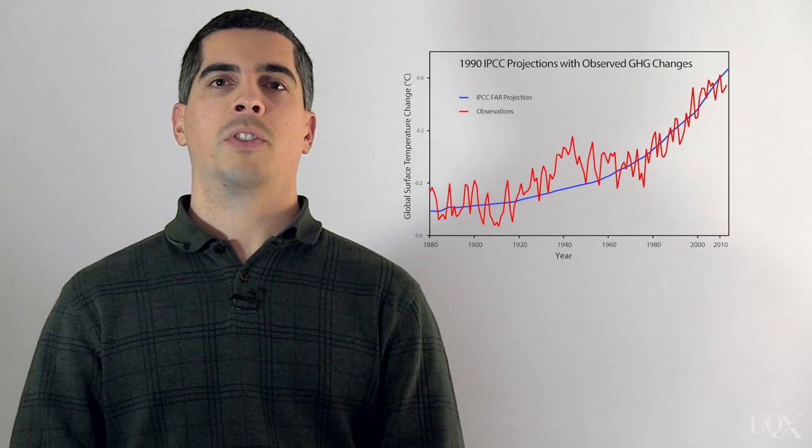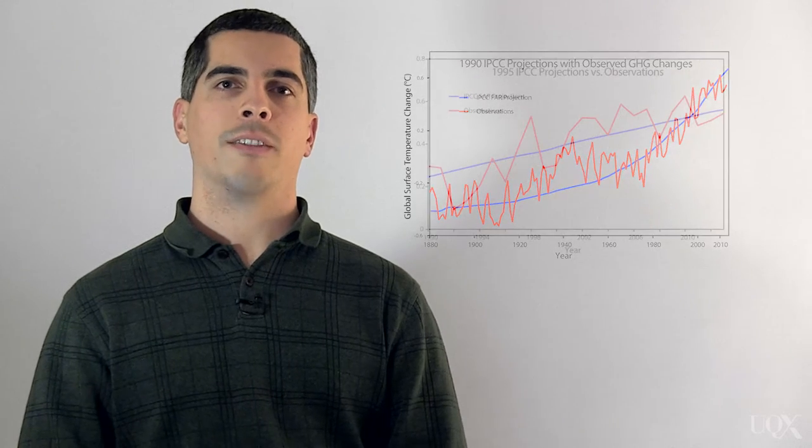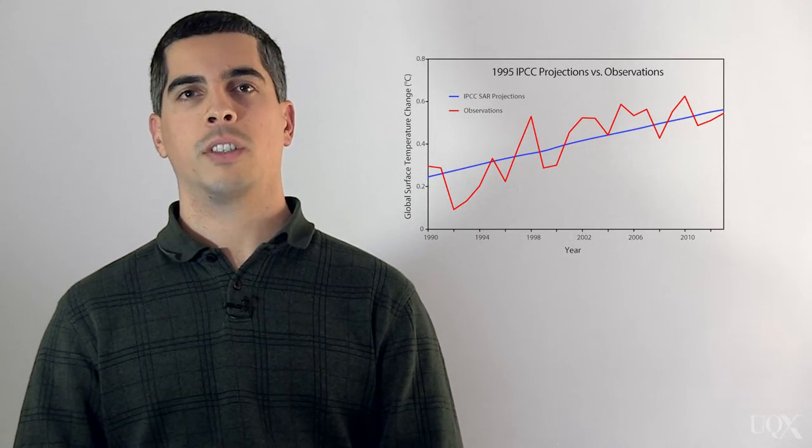The Intergovernmental Panel on Climate Change has also used simulations from the most advanced climate models available to project global temperature changes in each of its reports. Those reports were published in 1990, 1995, 2001, 2007, and 2014.